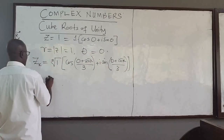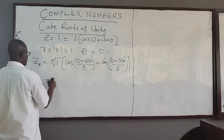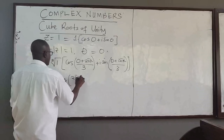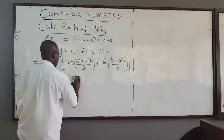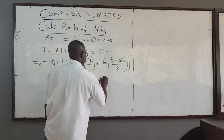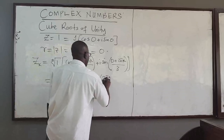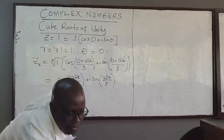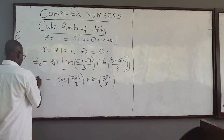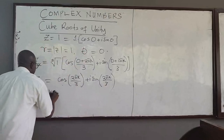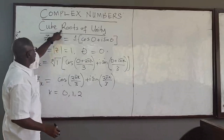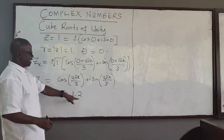This simplifies nicely. Since r equals one and theta equals zero, our formula becomes Z sub k equals cosine of two pi k over three, plus i sine of two pi k over three. Our roots are given by this, where k takes the values zero, one, and two. We want the cube roots, so n is three, and k runs from zero to n minus one.